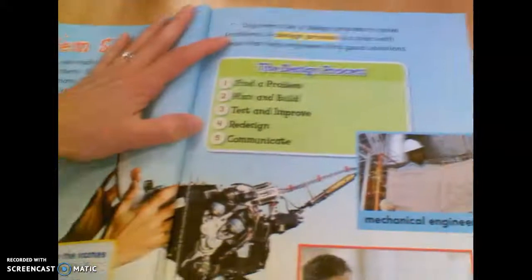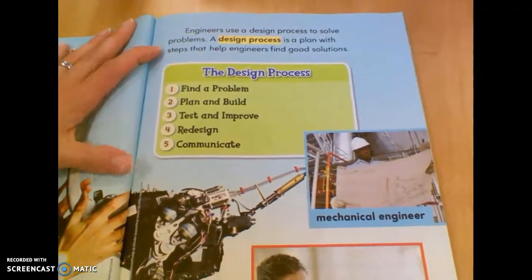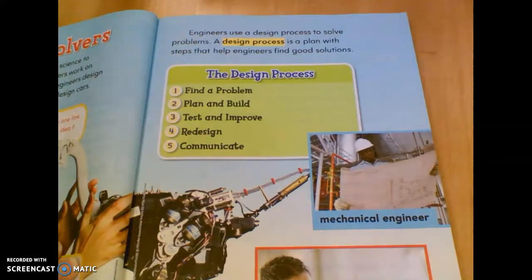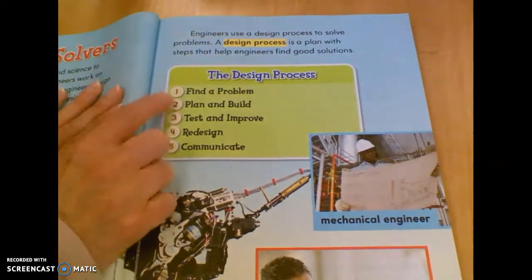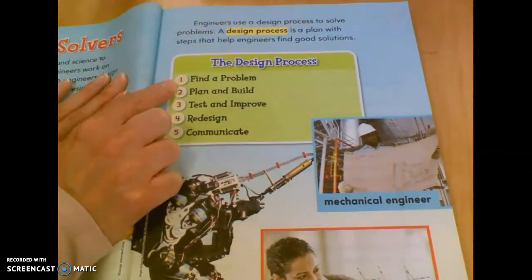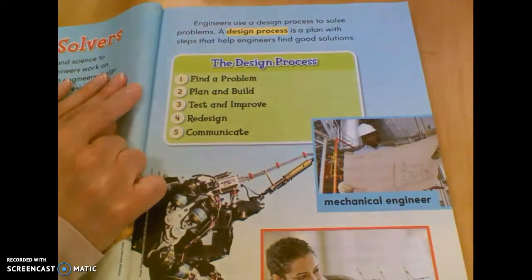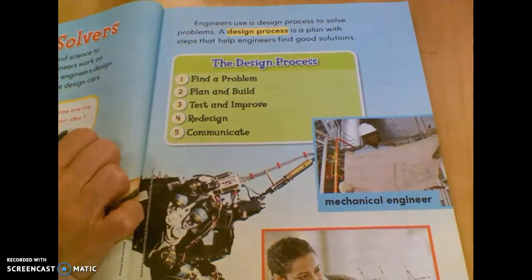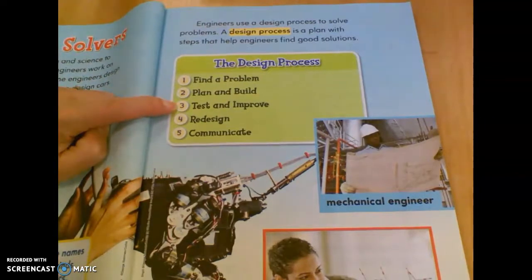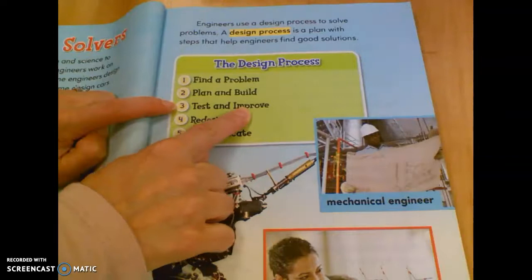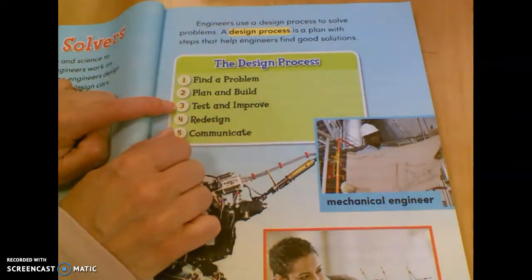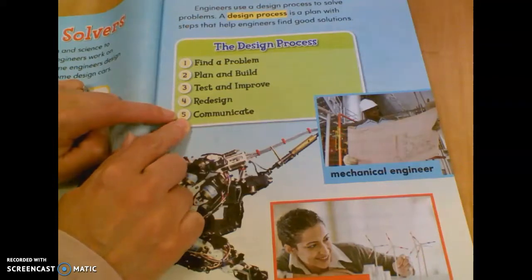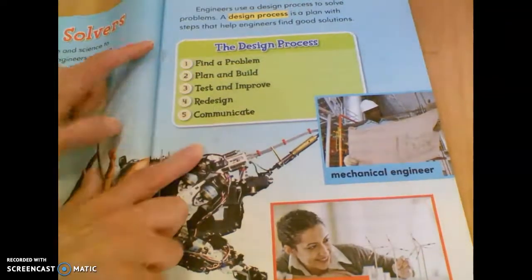On page 49, engineers use a design process to solve problems. A design process is a plan with steps that help engineers find good solutions. First, they find a problem — they figure out what the problem is. Next, they plan and build — they come up with a plan and build something to help solve that problem. Then they test what they built and improve it. Improve means fix it if something needs to be fixed. If there is something, they redesign it — remake it again. Then they share it with people, which is communicate. We kind of talked about this in the last chapter.